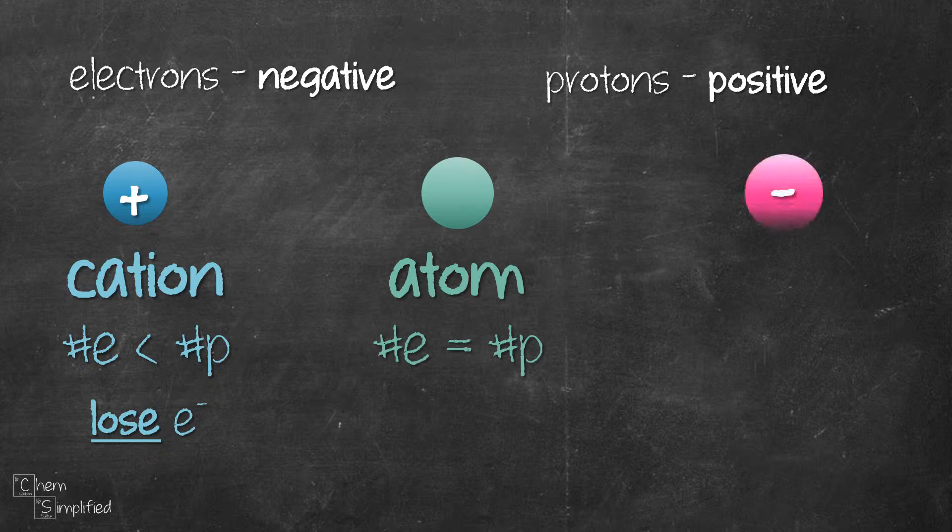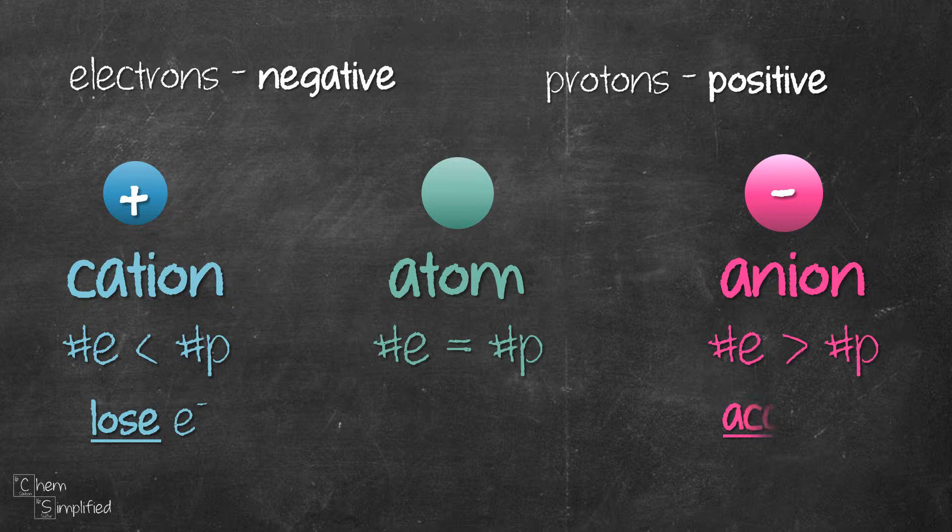For a negatively charged ion, which is an anion, it's the opposite. In order to become negative, it will have to accept electrons. Since it accepted electrons which are negative, the atom is now turned into a negatively charged ion.